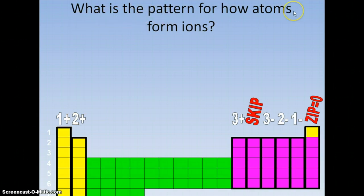All the elements on the periodic table have a pattern for how they're going to form ions. And it goes like this: 1 plus 2 plus 3 plus skip. 3 minus 2 minus 1 minus zip.